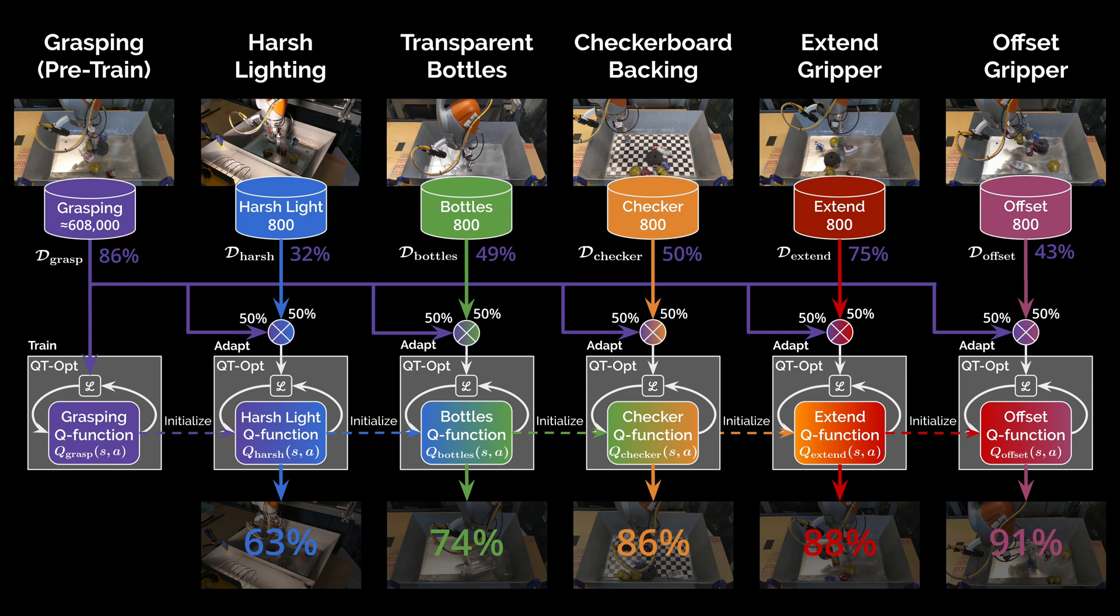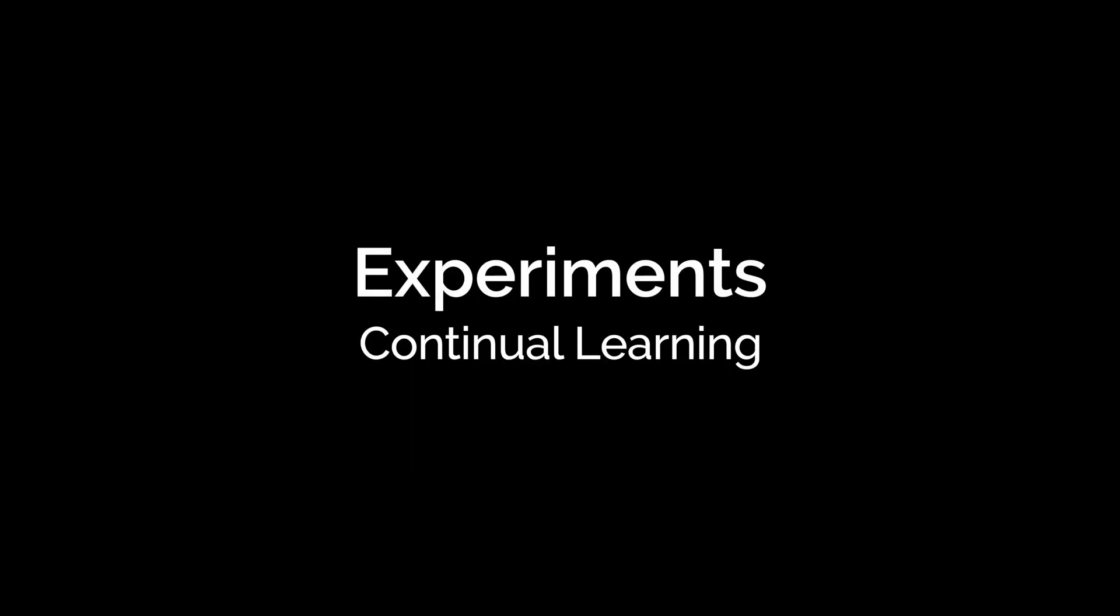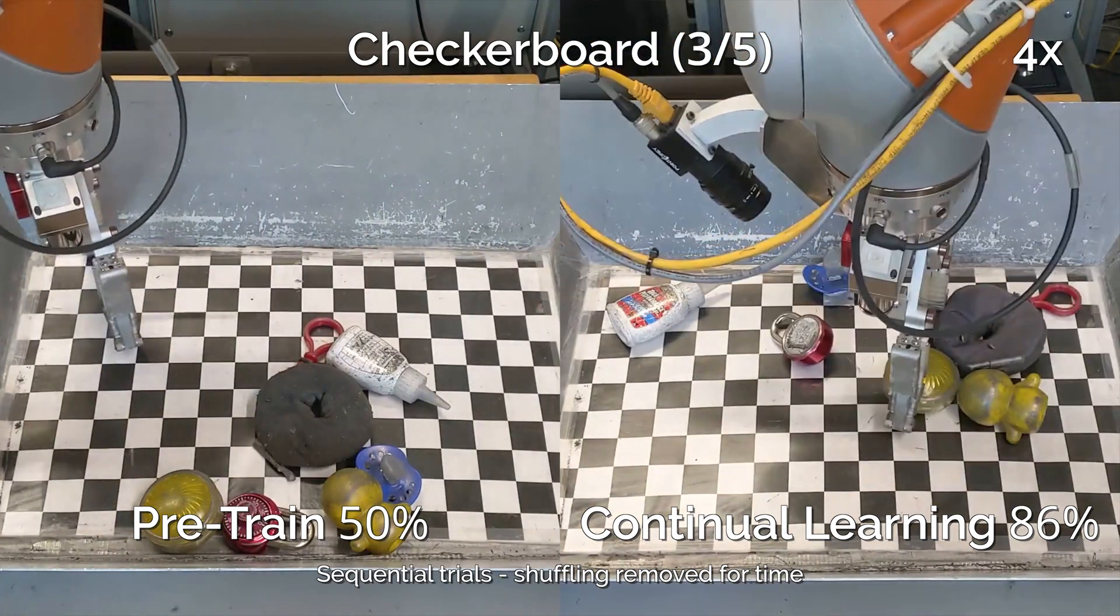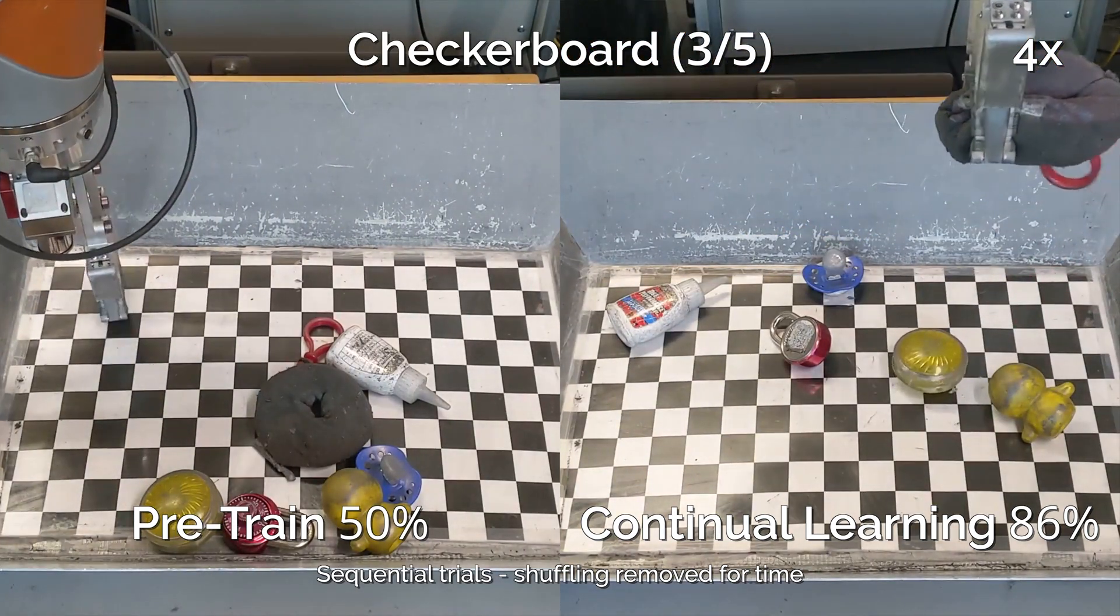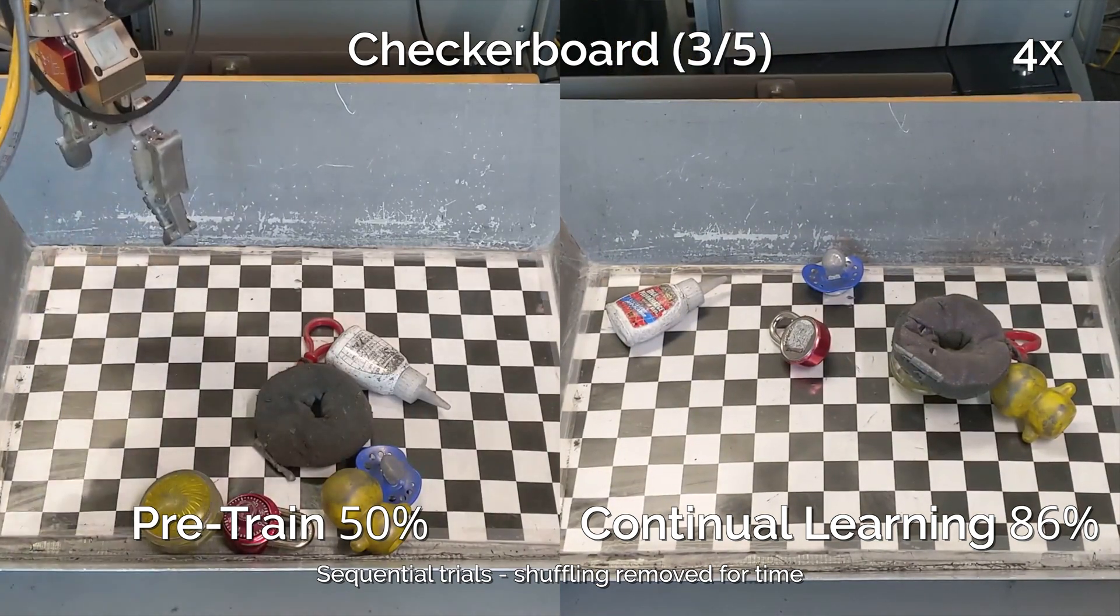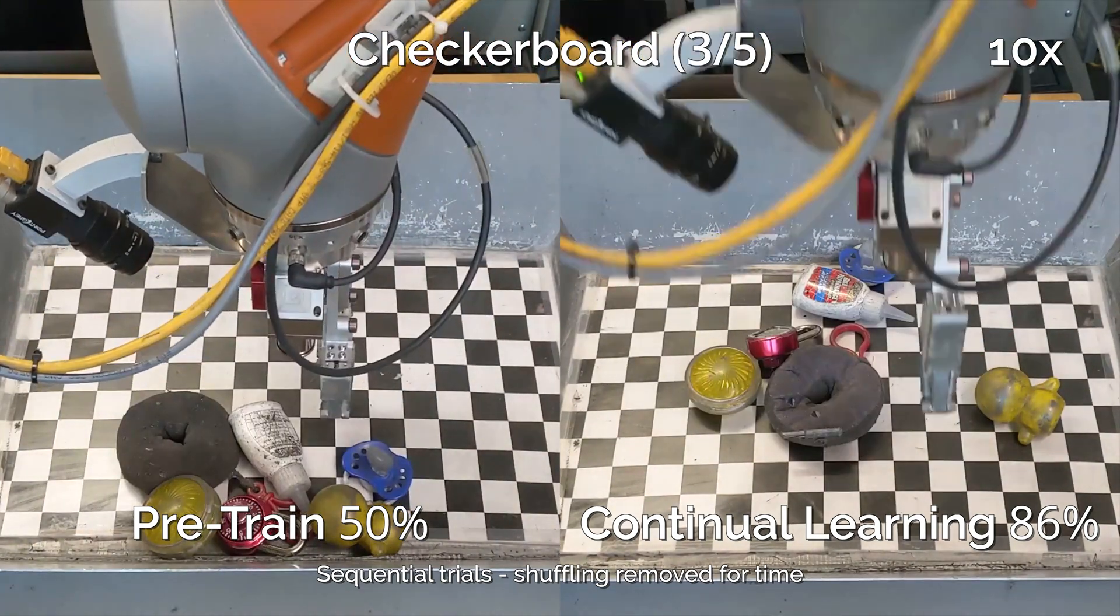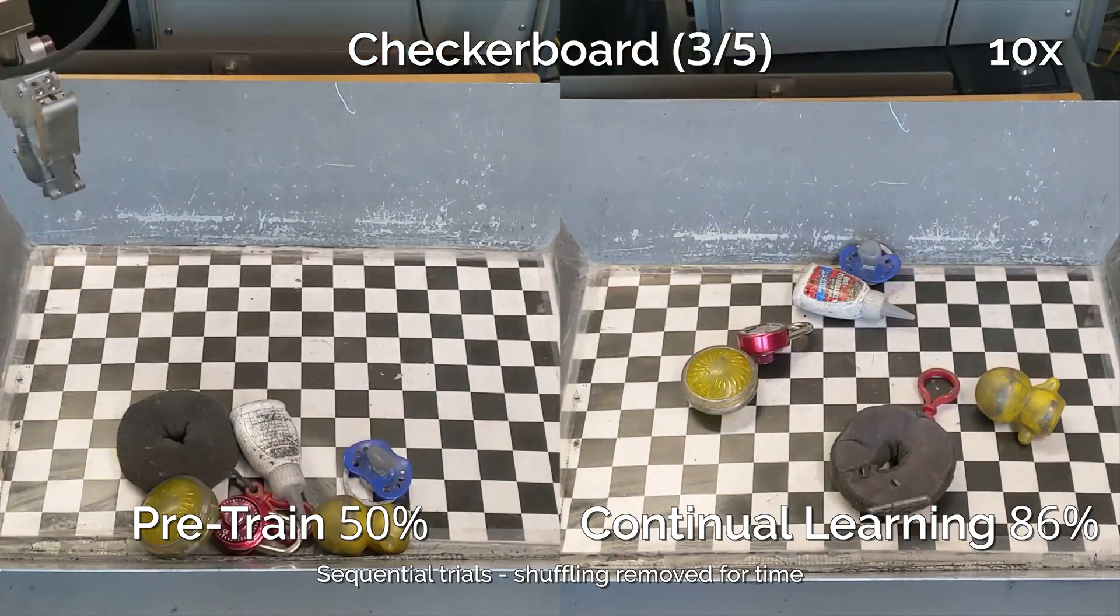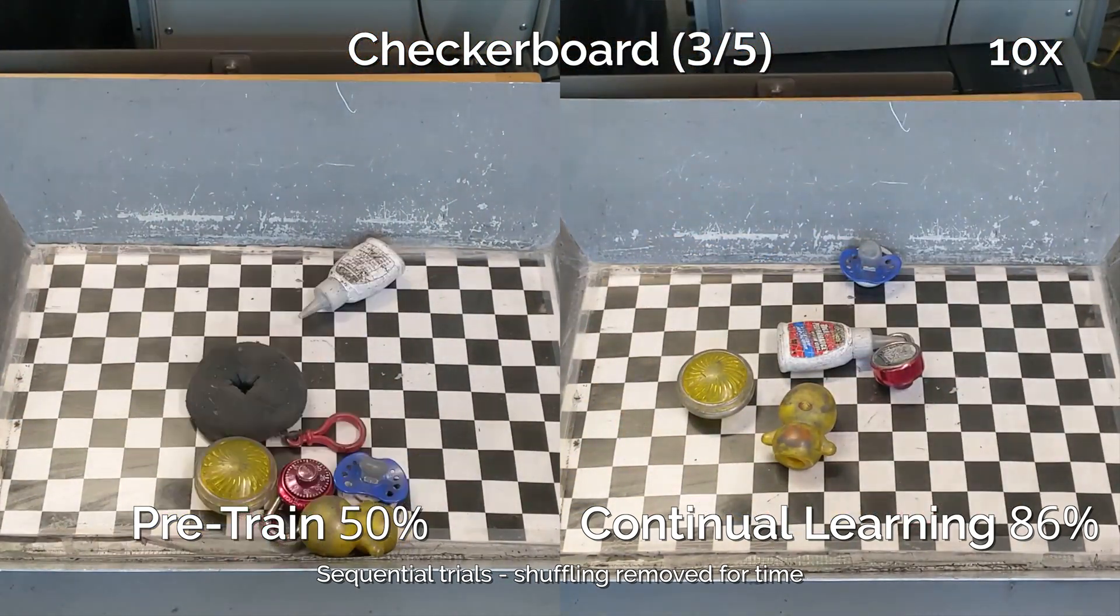This is a great property for a continual learner to have, and we hope our method can be used as a building block for a full continual learning method in the future. Let's take a closer look at a couple of the policies from the continual learning experiment. First, we return to the checkerboard challenge, which was the third of five fine-tuning iterations in our experiment. If this comparison looks basically the same to you as the single-step version from earlier, it's because the policy's success rate of 86% is only 4% less than the single-step version.